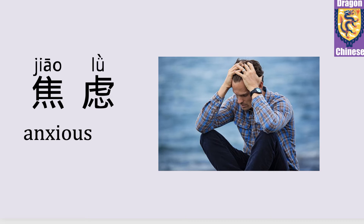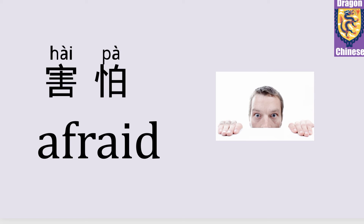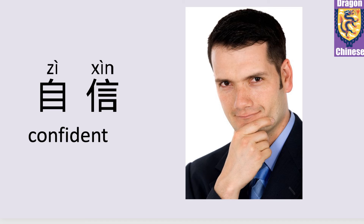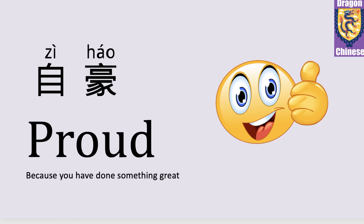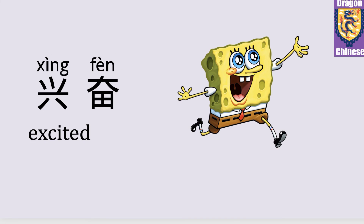焦虑 means Anxious. 焦虑. 担心 means Worried. 担心. 害怕 means Afraid. 害怕. 自信 means Confident. 自信. 自豪 means Proud — because you have done something great. 自豪. 自责 means Blaming yourself — because you have done something wrong. 自责. 兴奋 means Excited. 兴奋.